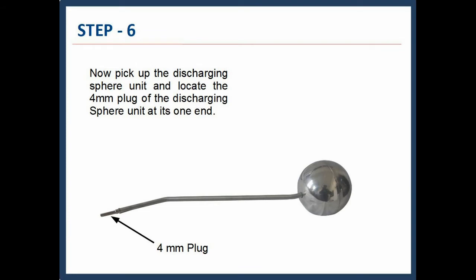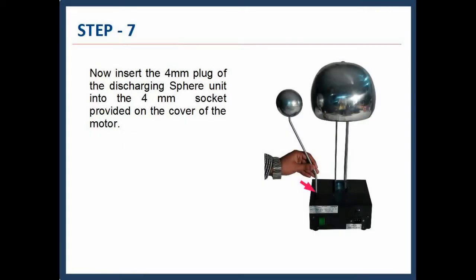Step 6: Now pick up the discharging sphere unit and locate the 4mm plug of the discharging sphere unit at its one end. Step 7: Now insert the 4mm plug of the discharging sphere unit into the 4mm socket provided on the cover of the motor.